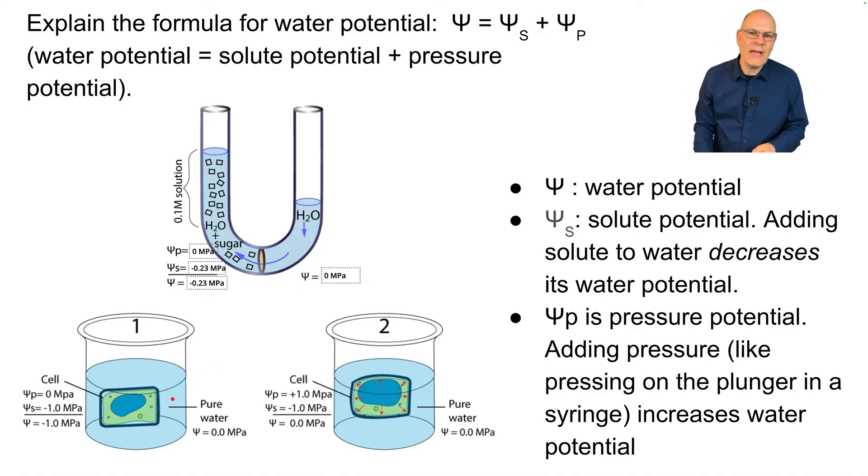In this example, we have potato cell or potato tissue that's been placed in water. Again, there's no pressure on either side, it's just an open container. But the cell has a negative 1.0 megapascal solute potential. So the total water potential is negative 1.0. This is just water, so the water potential is zero.